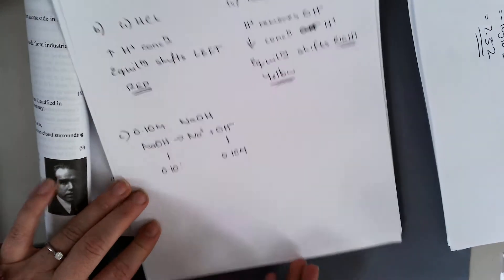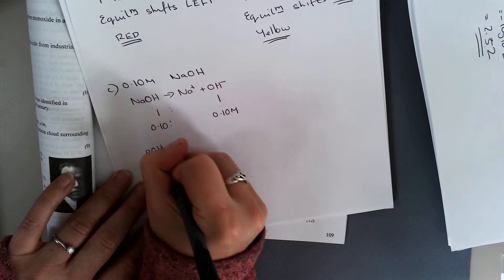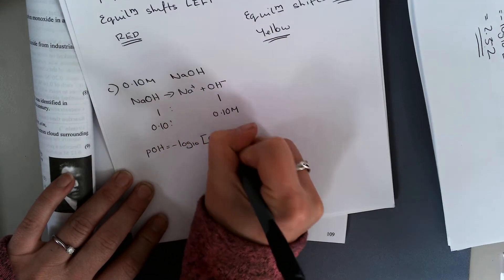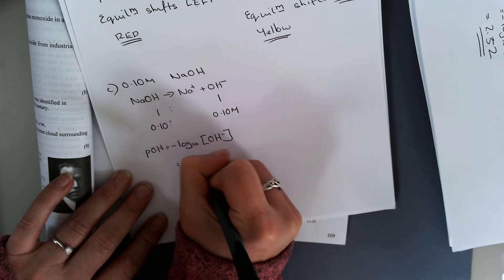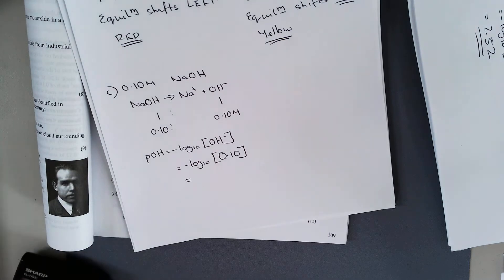I have the same number of moles of OH minus ion concentration. My pOH equals minus log to the base 10 of my OH minus ion concentration. That's minus log to the base 10 of 0.10.